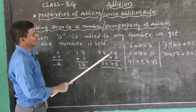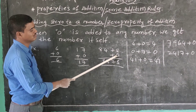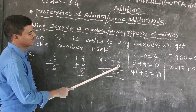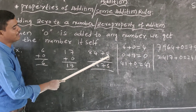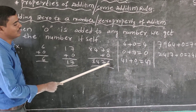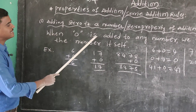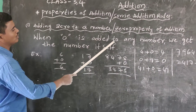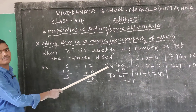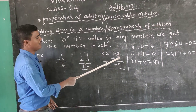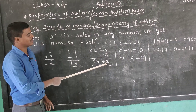Next: 8,478 plus 0. We do the ones place first: 8 plus 0 is equal to 8. Or 8 plus 0 is equal to 8 — because when 0 is added to any number, we get the same number. So 8 plus 0 equals 8.